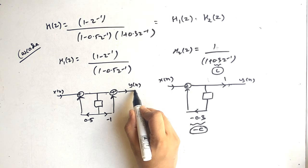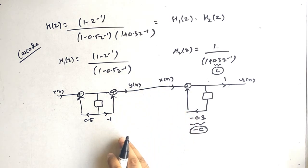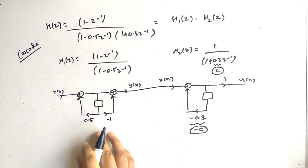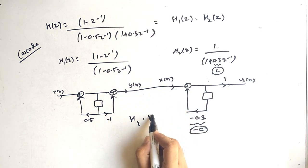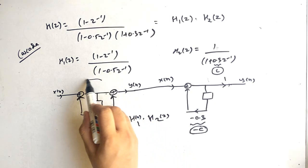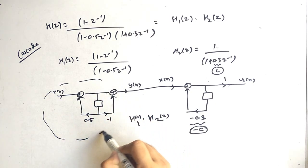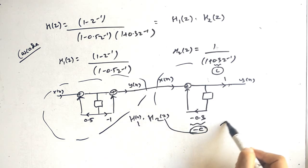Because it is cascade, you have to join these two together. You have now multiplied H1 of Z into H2 of Z — this is H1 and this is H2.